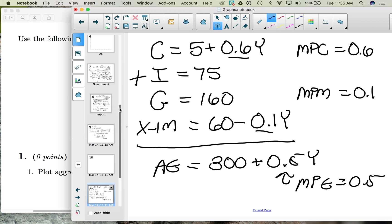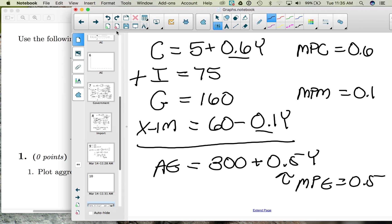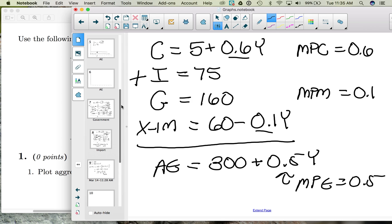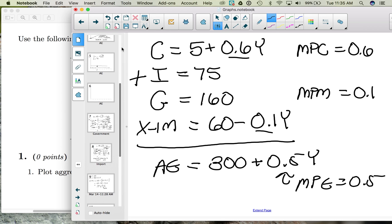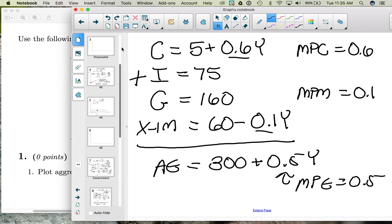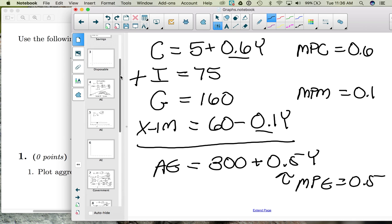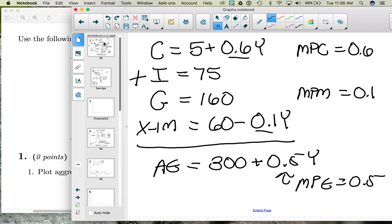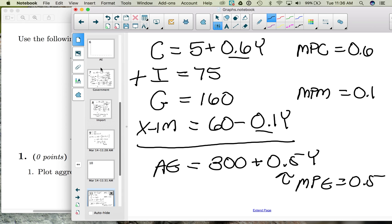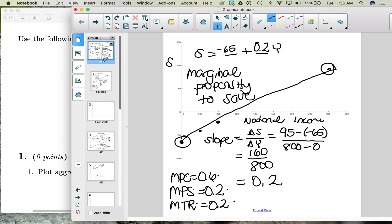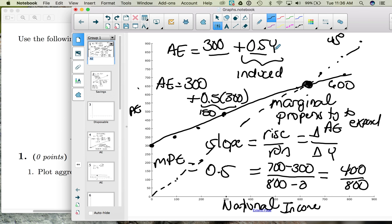And if we go back to our first video when we graphed aggregate expenditures, we found that the aggregate expenditure function was 300 plus 0.5Y. So when we plotted the data originally, we found a formula of 300 plus 0.5Y. We have now just gone full circle and ended back at that formula by adding up the consumption spending, the investment spending, the government spending, and the net exports.